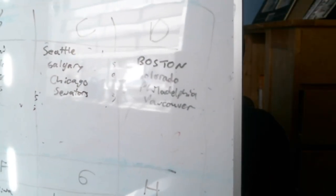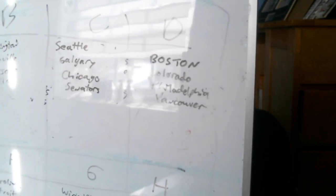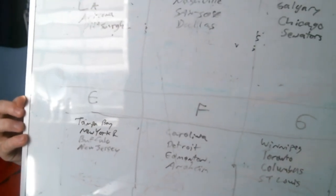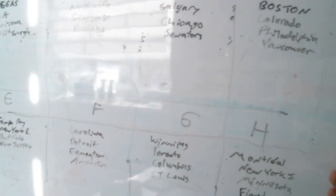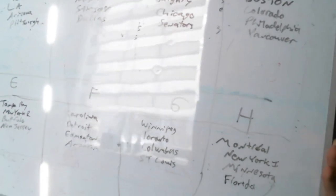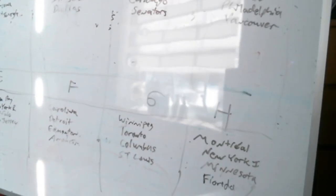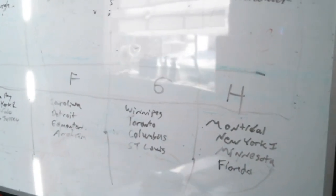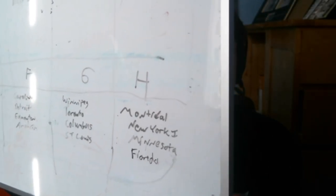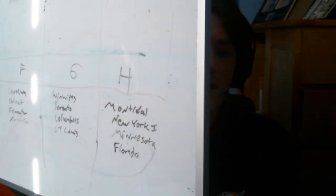Group D: Boston, Colorado, Philadelphia, Vancouver. Group E: Tampa Bay, New York, Buffalo, New Jersey. Group F: Carolina, Detroit, Edmonton, Anaheim. Group G: Winnipeg, Toronto, Columbus, St. Louis. Group H: Montreal, the Islanders, Minnesota Wild, and Florida Panthers.